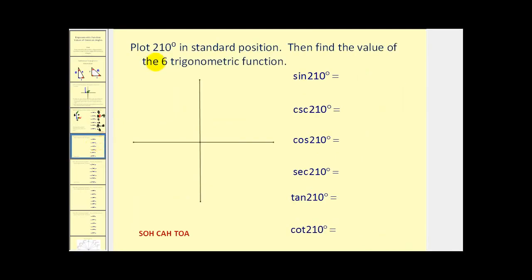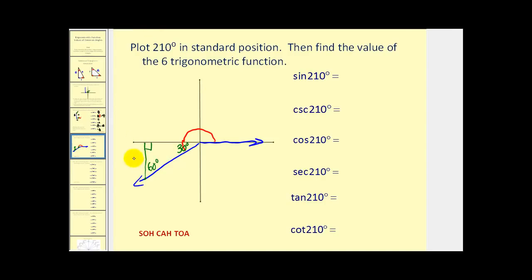Let's plot 210 degrees in standard position. That's 180 degrees plus 30 more degrees to the terminal side. We pick a point on the terminal side and connect it to the closest part of the x-axis to form our reference triangle. The reference angle is 30 degrees, giving us another 30-60-90 right triangle. The coordinate here has both a negative x and y value. The sine of 210 degrees is opposite over hypotenuse, or negative one over two, which is negative one-half.